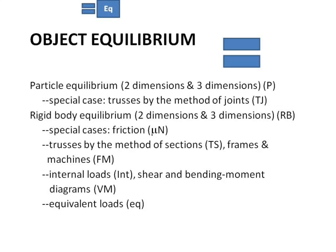We're going to specifically call to mind two dimensions and three dimensions. In terms of particles, trusses by the method of joints is just a special case of particles. Then we did rigid bodies, two dimensions and three dimensions. Special cases would include friction, trusses by the method of sections, frames and machines. Internal loads, shear and bending moment diagrams—again, special case of rigid body equilibrium. Instead of taking the whole thing, we're taking portions. Even the definition of equivalent load, everything is equilibrium.